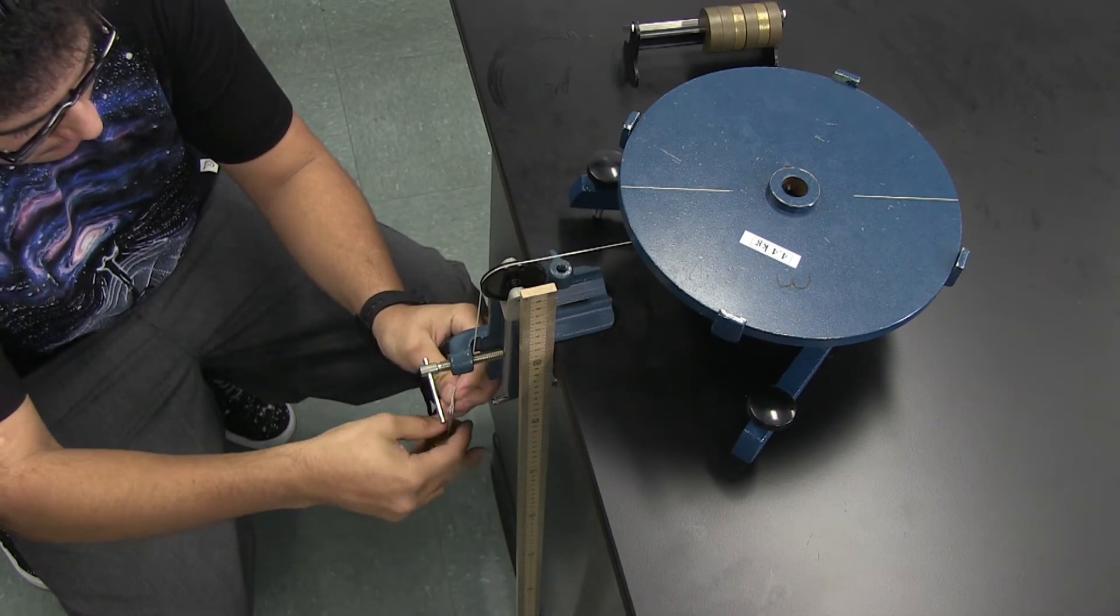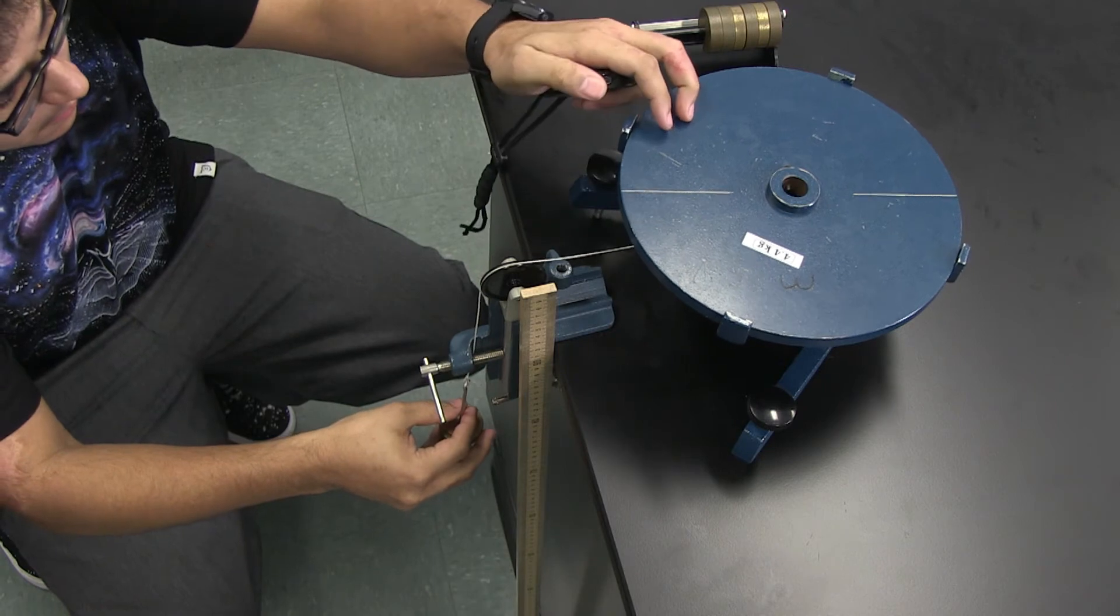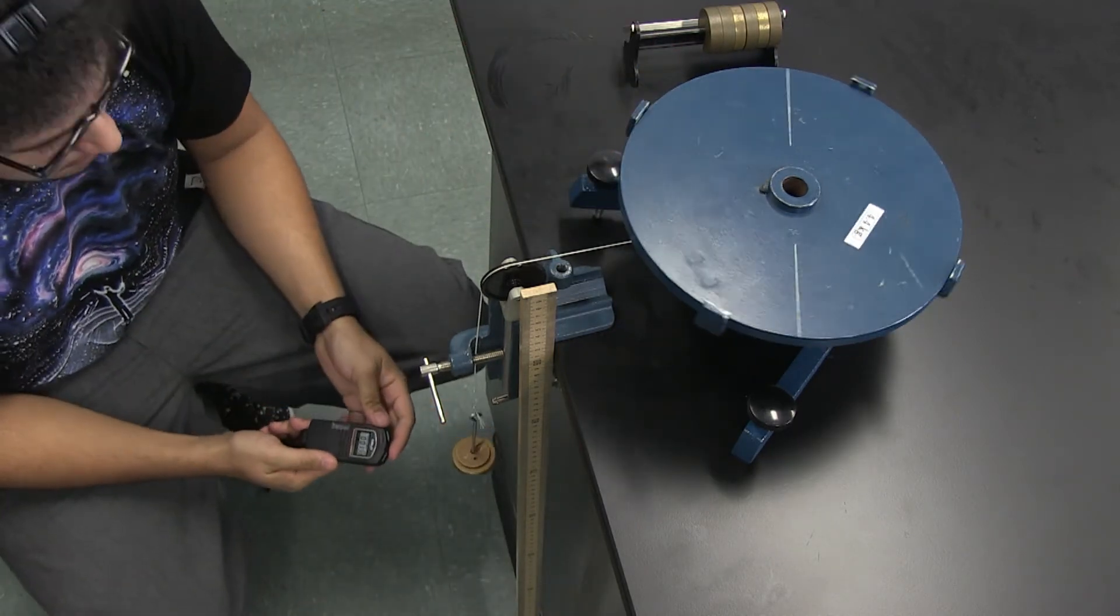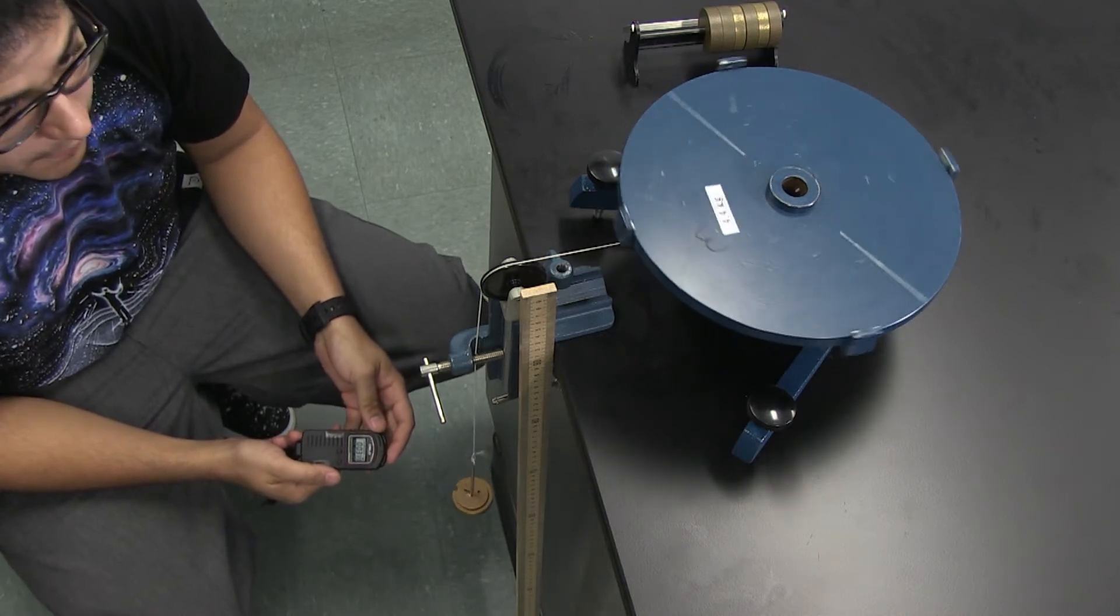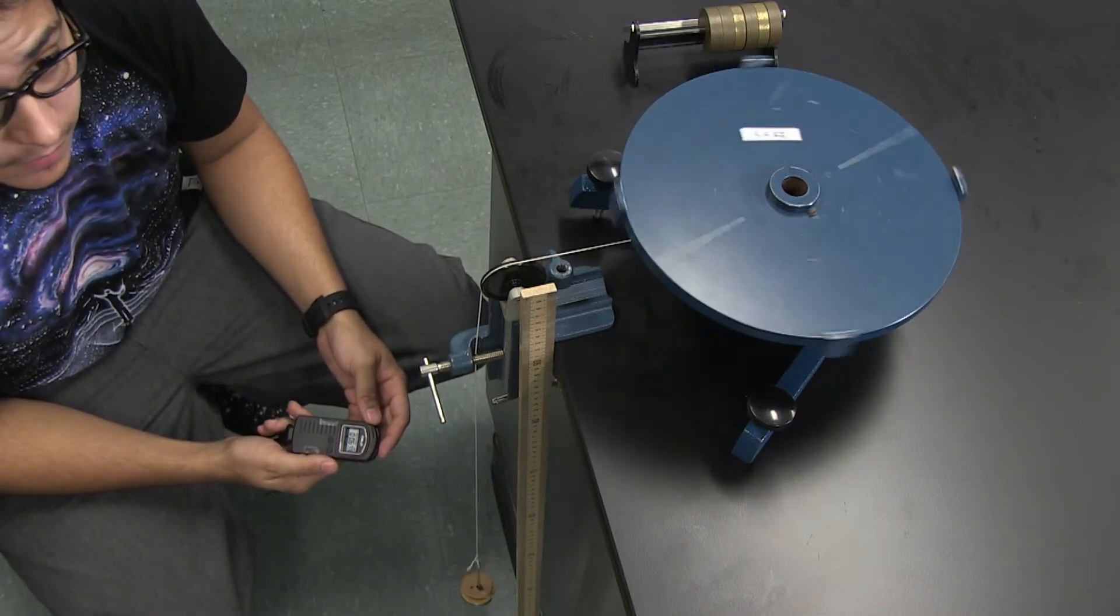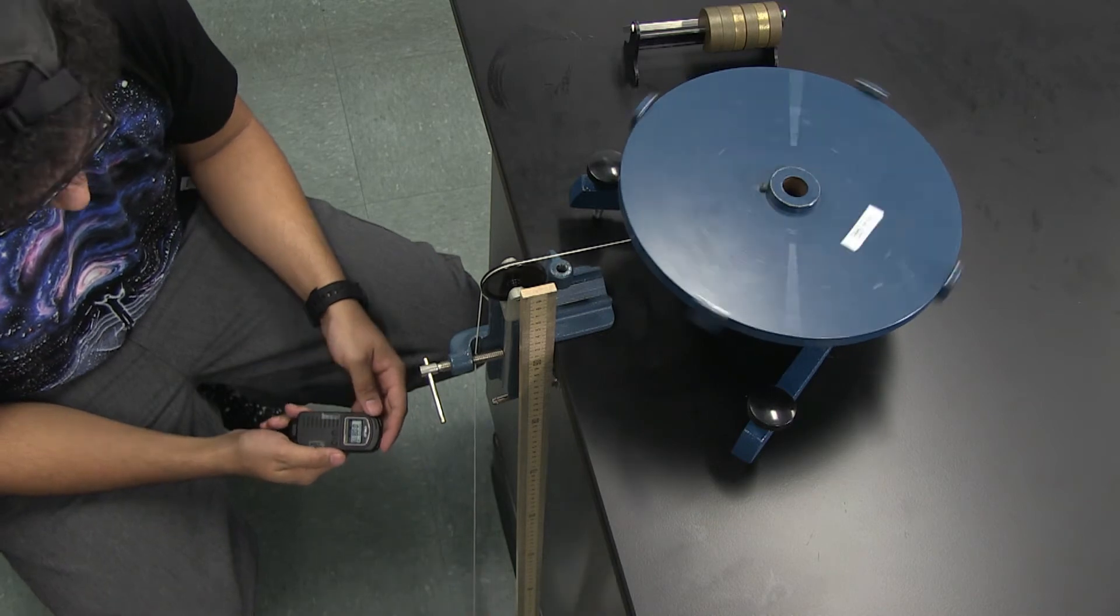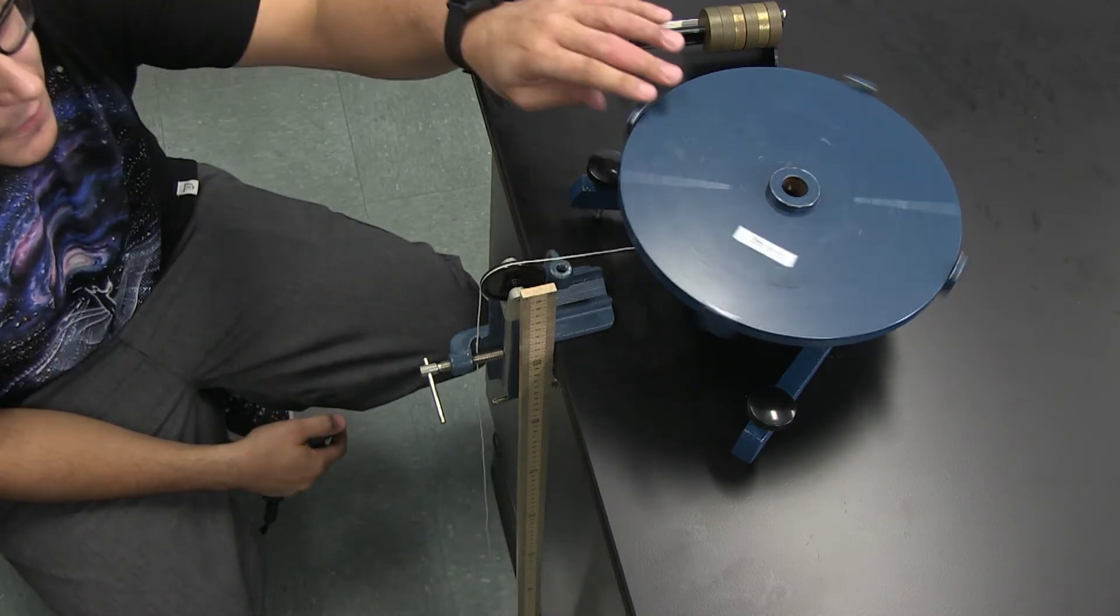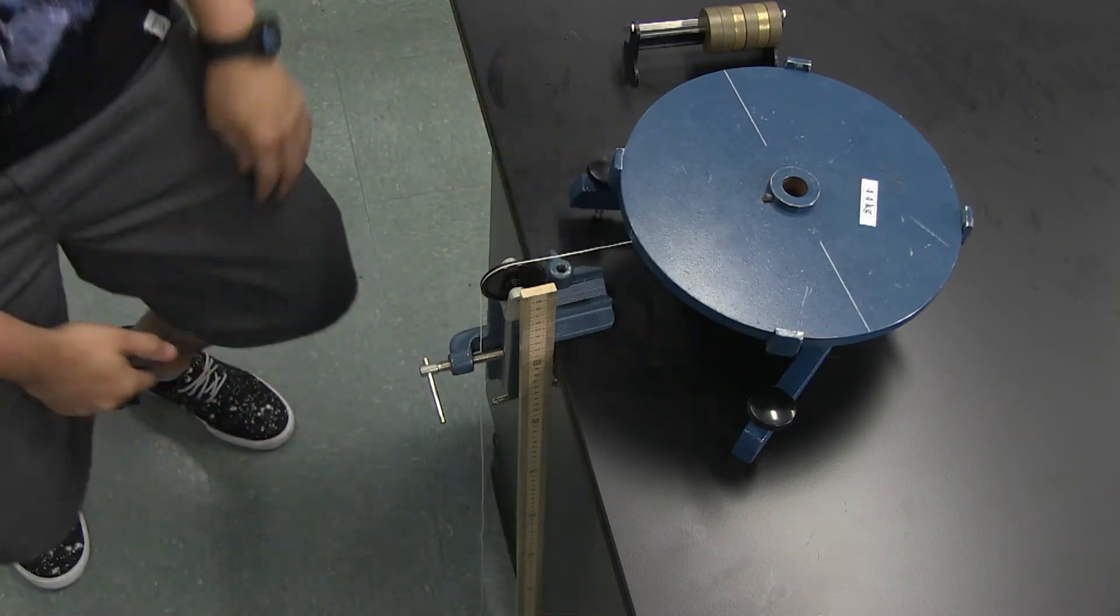In this case, as the hanging mass falls, its initial gravitational potential energy is converted more and more into the kinetic energy of itself, as well as the rotational kinetic energy of the rotary table and the disk. Finally, just when it is about to hit the ground, it has no potential energy left. All the energy is in the form of kinetic.